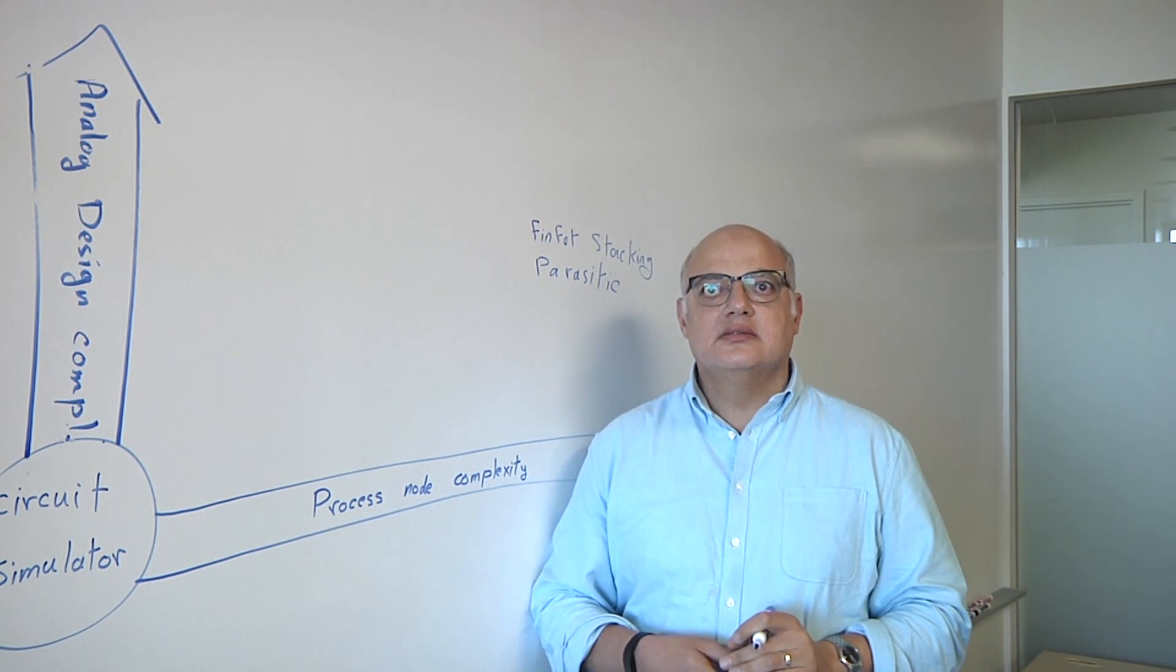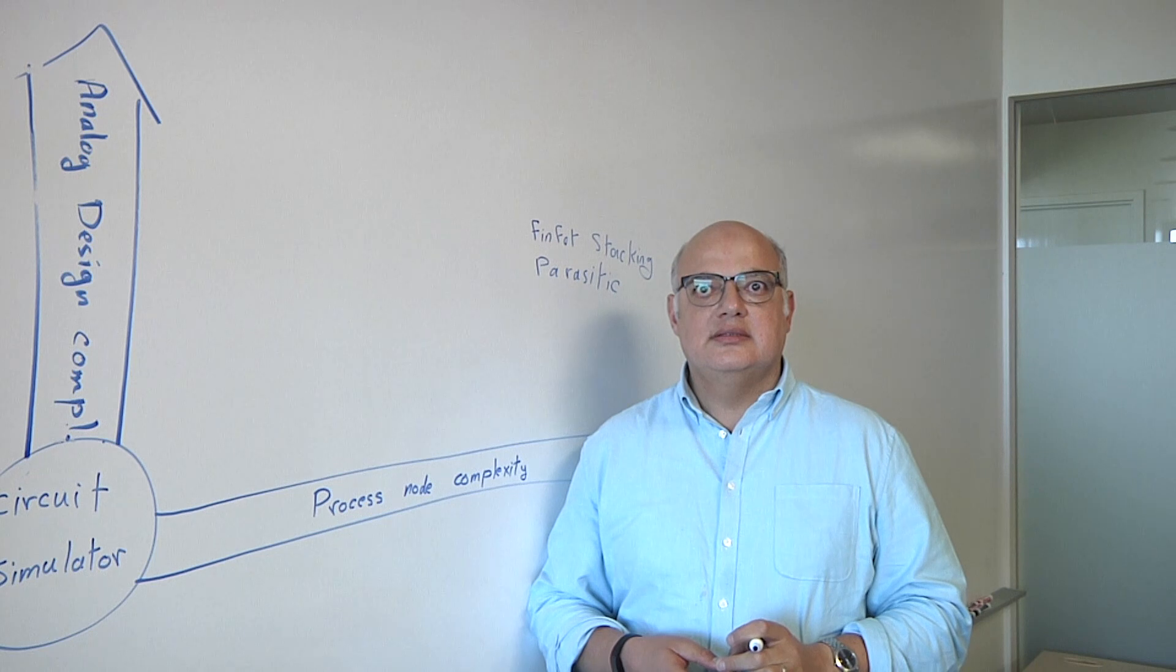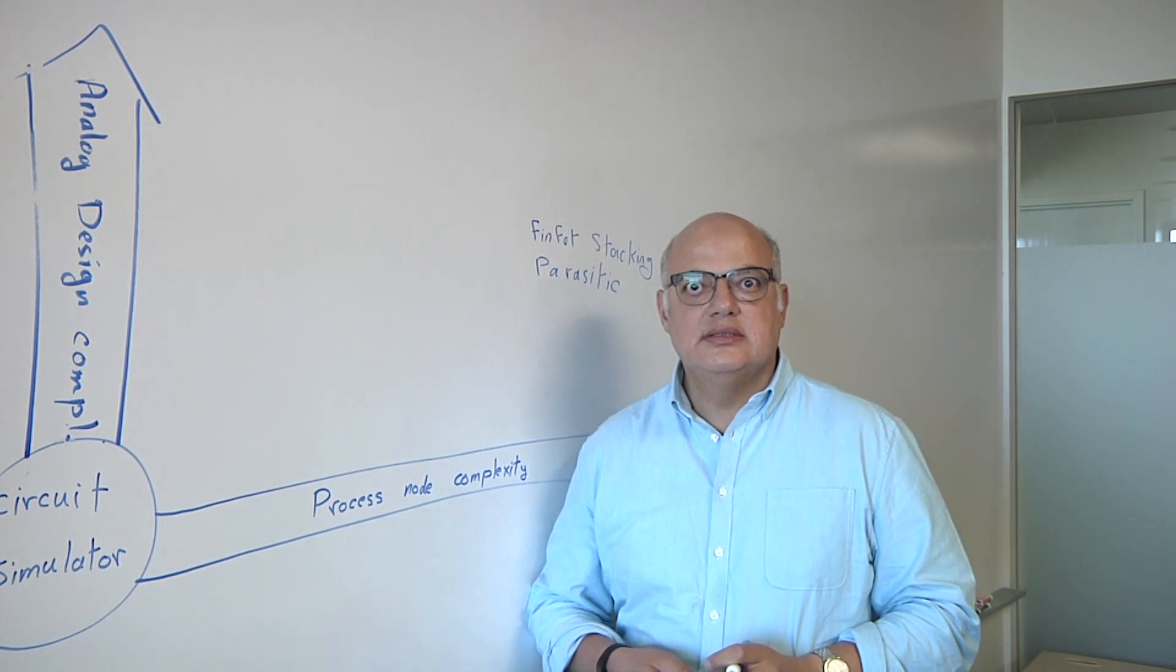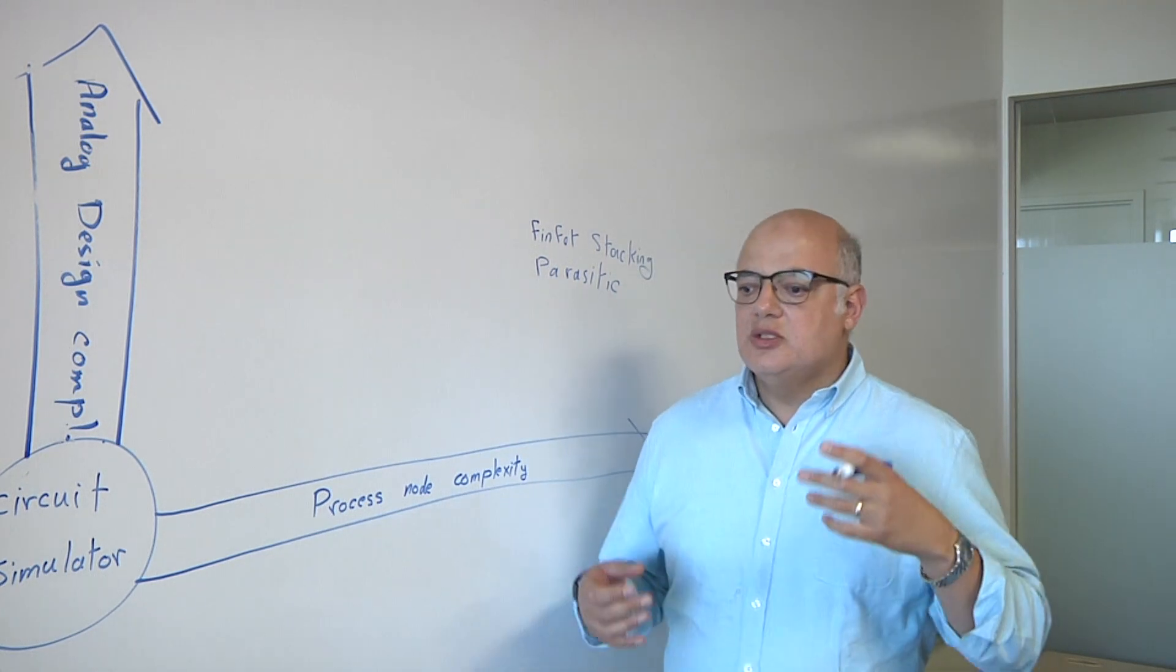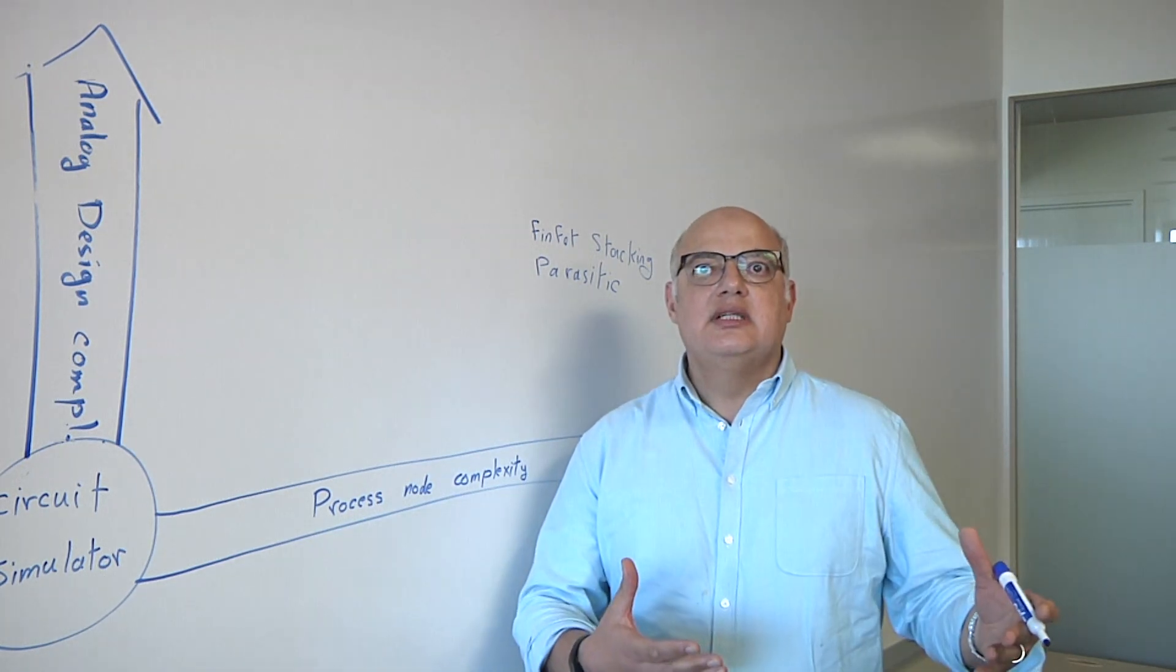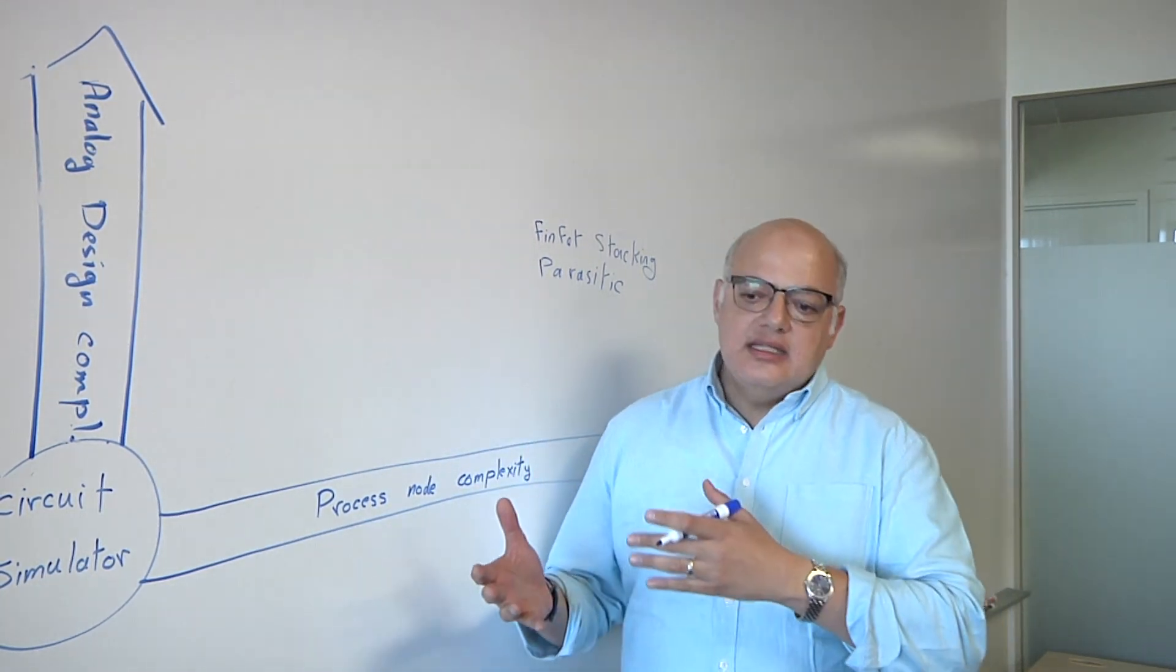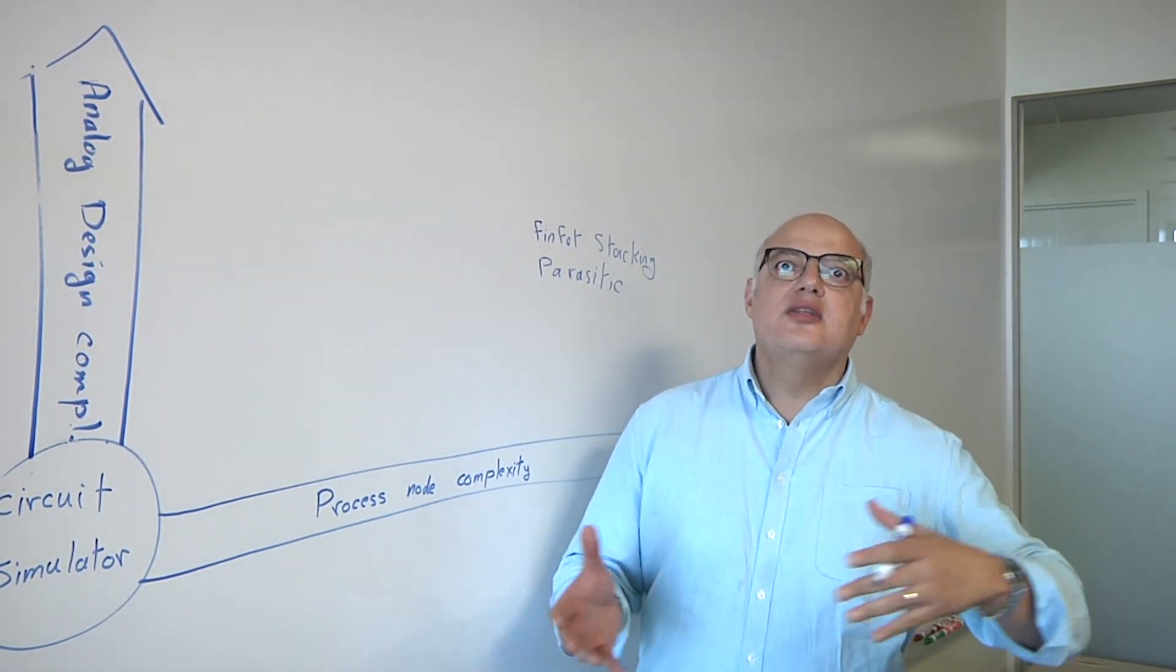This gets a lot more complicated as we get down to the most advanced nodes. Because in the past, you could basically create your analog circuitry and then add it in later on, right? Now you have to almost do this as part of the entire design process of the chip. Exactly. In the past, I would say most of the analog design was done before the layout. Then, after the layout, you extract the parasitic and then it becomes more of a sign-off phase.